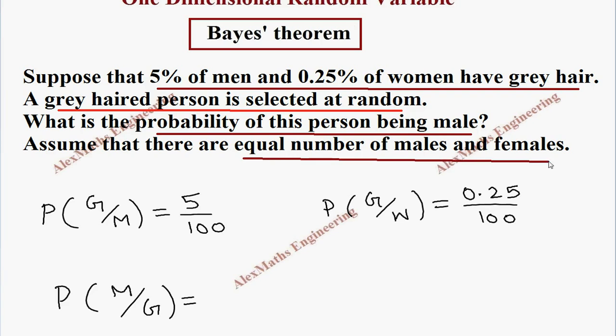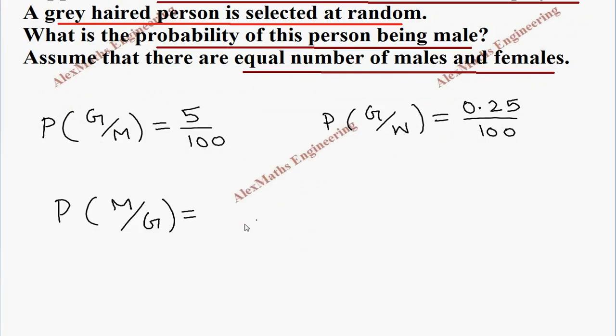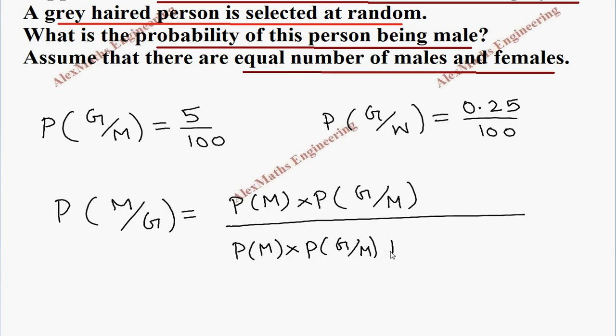The question they have given, assume that there are equal number of males and females. So we are going to write the formula for this. It is P of M, we have to write the numerator part, and it is reciprocal P of G by M. Whole division. Total probability. We have to write the same thing. And we have to write for the other option also. We have written it for male. And we have to write it for the women. So P of W into P of G by W.